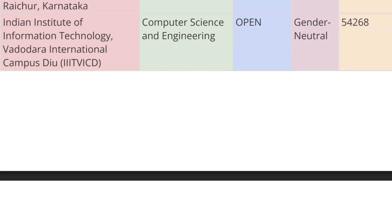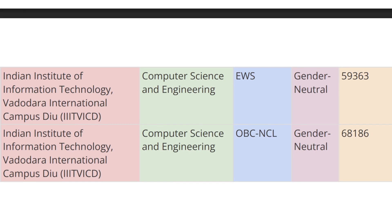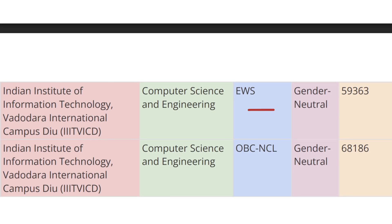Next in the list we have IIIT Vadodara International Campus, DIU. For Open category the cutoff rank is 54,268, for EWS category the cutoff rank is 59,363, and for OBC-CL the cutoff rank is 68,186.